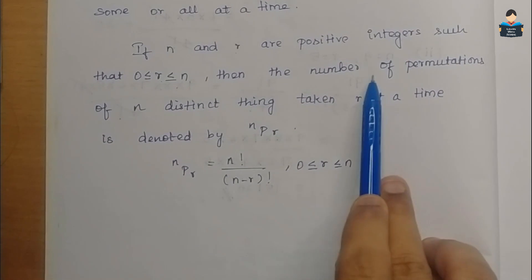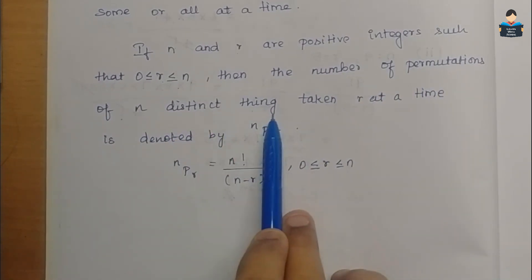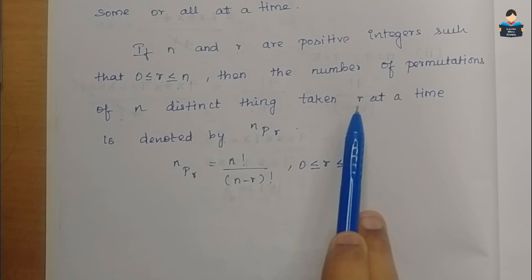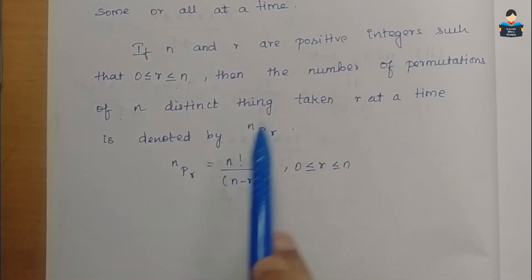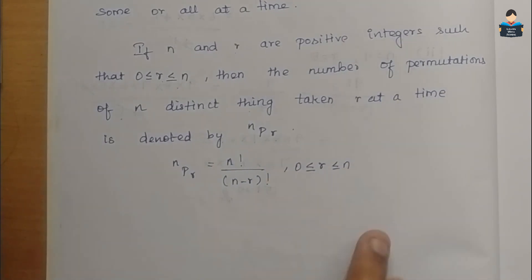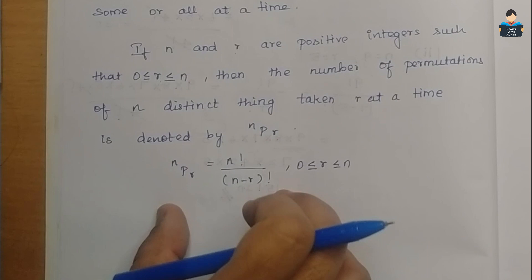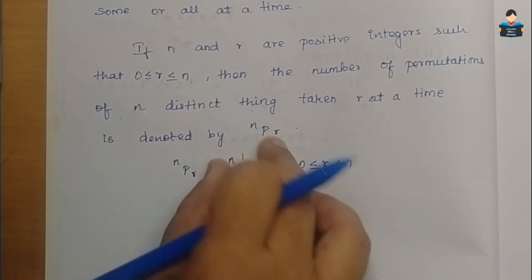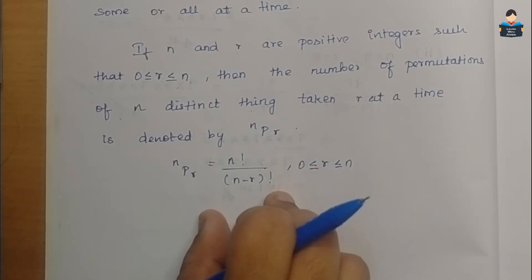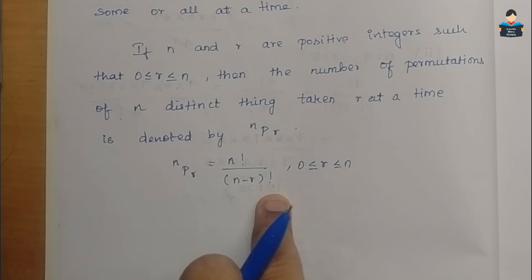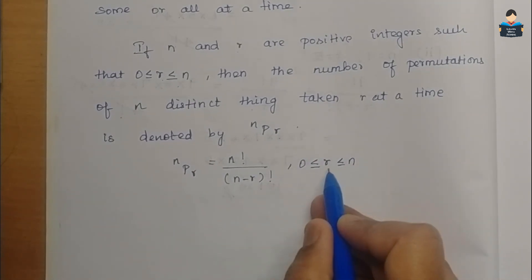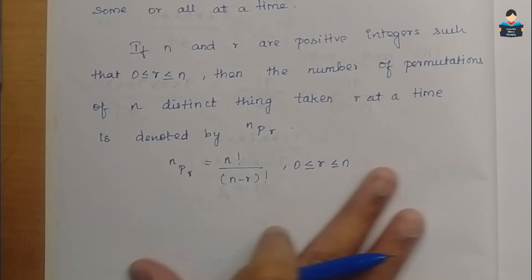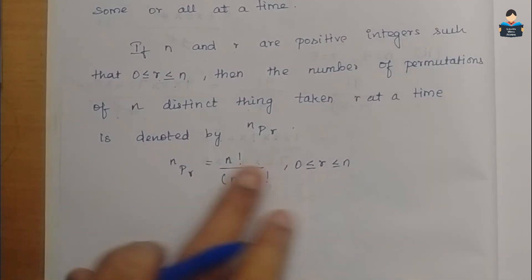The number of permutations of n distinct things taken r at a time — that is, repetition not allowed — is given by nPr equals n factorial divided by (n minus r) factorial, provided r is between 0 and n.